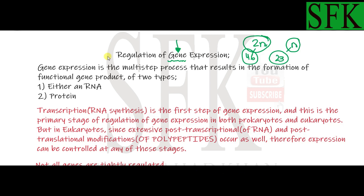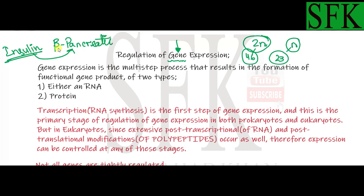For example, the beta pancreatic cells of the pancreas have the insulin gene activated — insulin is produced in beta pancreatic cells. Insulin is a polypeptide produced there because the insulin gene in beta pancreatic cells is activated and capable of expressing insulin. But if you take a cheek cell or a cell from any other part of the body, it is not capable of producing insulin because that gene is not expressed.